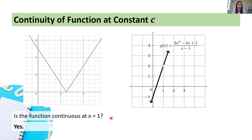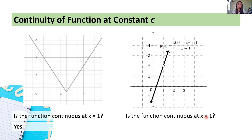For the last example, consider the sketch of the graph of g of x is equal to 3x squared minus 4x plus 1, all over x minus 1. Is the function continuous at x equals 1? If I trace the graph with a pen, the pen will lift to continue the line — and there is a hole in our graph at this point. At x equals 1, there is a hole. Therefore, the function is not continuous — it is discontinuous at x equals 1.